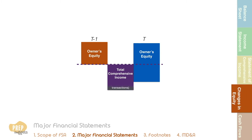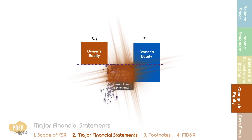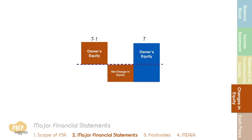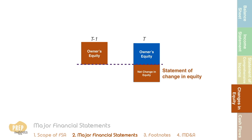Another source of change in equity is shareholder transactions. For example, if a dividend is paid out, this reduces equity. The net effect of total comprehensive income and shareholder transactions should account for the net change in equity for the period, assuming there are no minority interests. All these changes are reported in the statement of changes in equity, which consolidates the amounts and sources of changes in investors' equity over a period of time.